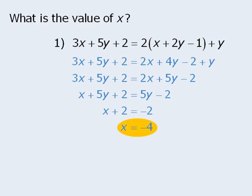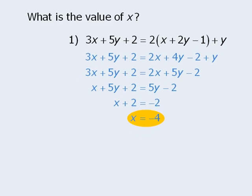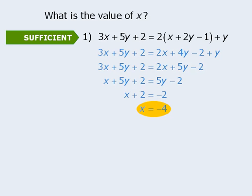Since we can definitively determine the value of x, statement 1 must be sufficient. Now, it could be argued that this equation does not truly have two variables since one variable essentially disappeared upon closer inspection. The point here is that some equations may look like they have two variables, in which case we may draw the wrong conclusion about whether or not they can be solved. So watch out for that.